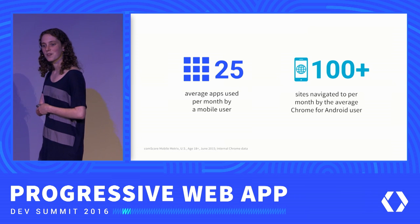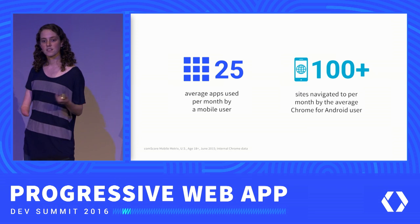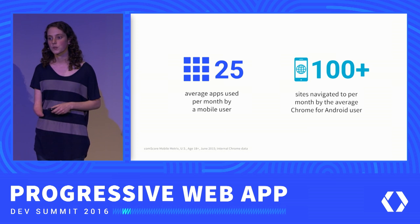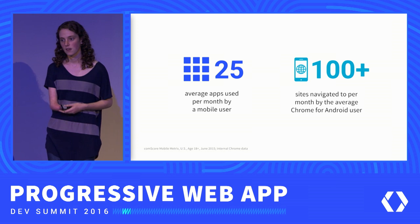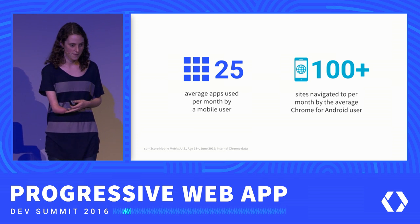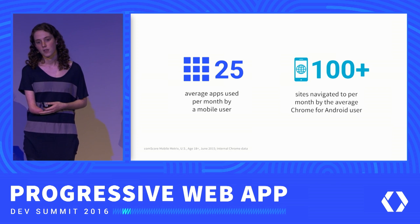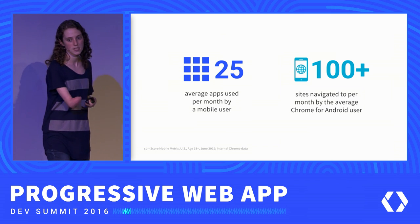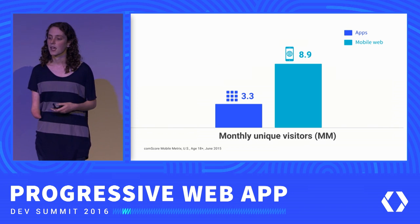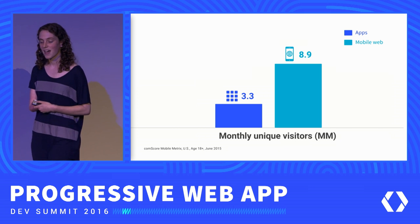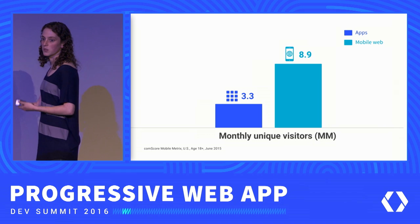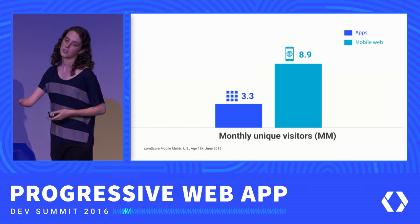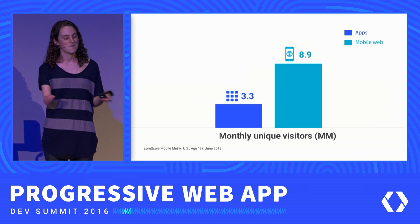We've been talking a lot about the reach that this introduces. Removing these barriers has a real impact on the reach that your experience can have. We see that on average, users navigate past 25 apps per month, compared to over 100 websites that a user will navigate past on Chrome on Android in a single month. Looking at the top 1,000 mobile apps and the top 1,000 websites, we see that on average there are 2.5 times as many users on the mobile web. And mobile web is also growing at two times the rate of native apps in terms of numbers of users.